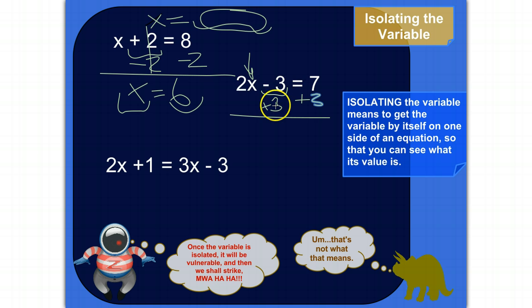So minus three plus three just cancels out. That's why we did that in the first place. So this side of the equation becomes 2x and the other side of the equation becomes seven plus three, which is 10.